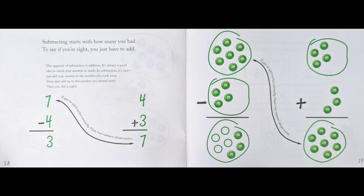Subtraction starts with how many you had. To see if you're right, you just have to add. The opposite of subtraction is addition. It's always a good idea to check your answers in math. In subtraction, it's easy. Just add your answer to the number you took away. Does that add up to the number you started with? Then you did it right. 7 - 4 = 3. If you subtracted correctly, these two numbers should match. 4 + 3 = 7.